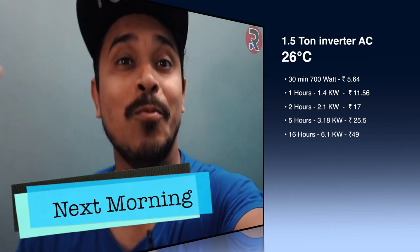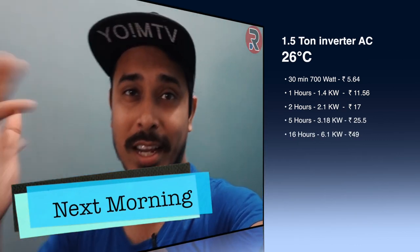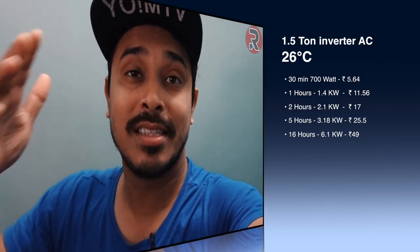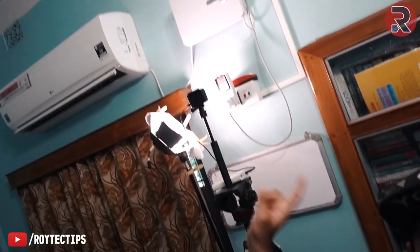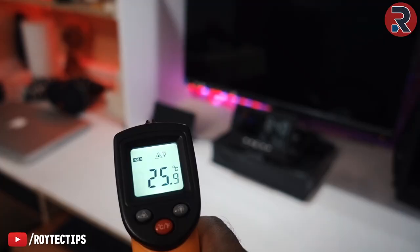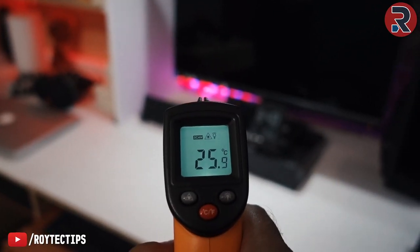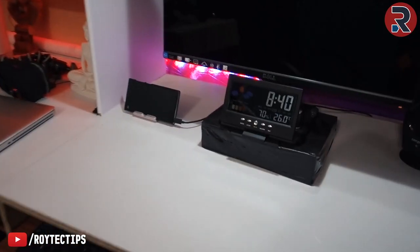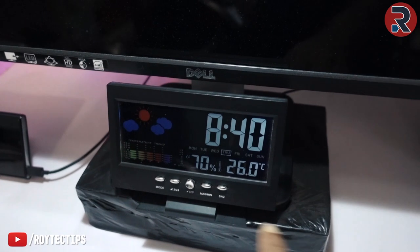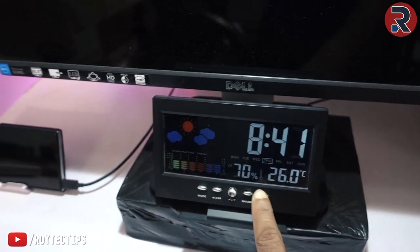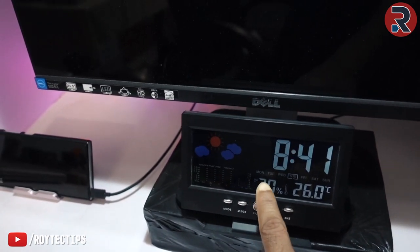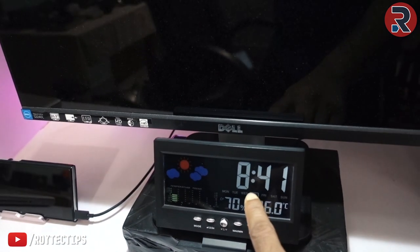Good morning! It's been about 16 hours running the AC at 26°C. The room temperature is now 26°C, humidity is 70%, and the time is 8:40 AM.